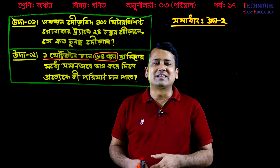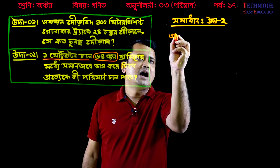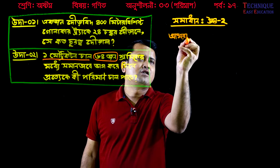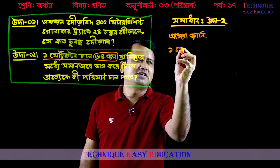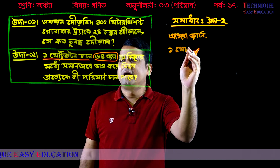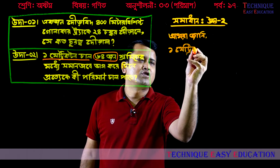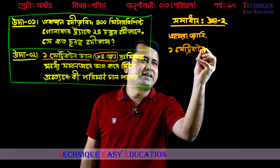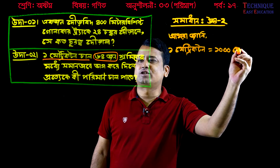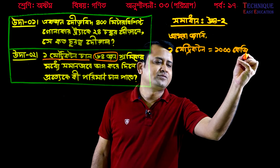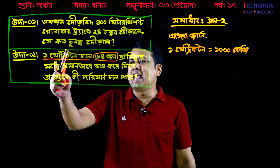Look, this is what we have to do. 1 metric ton — we know 1 metric ton is 1,000 kg. We know 1 metric ton increment is 1,000 kg.